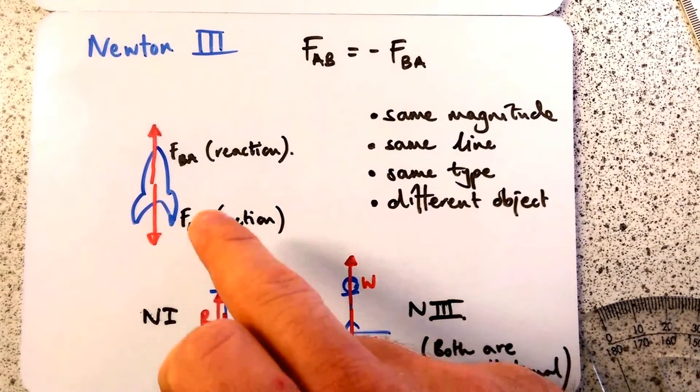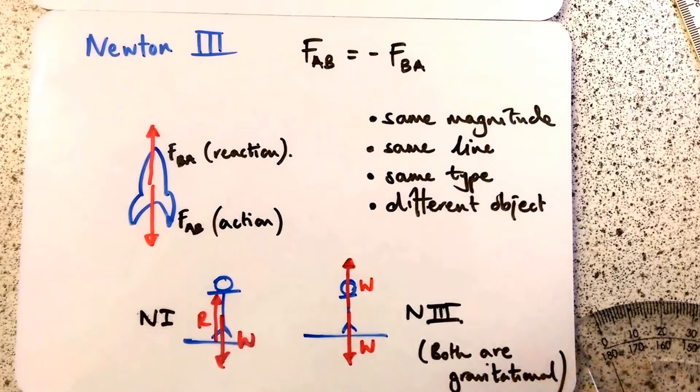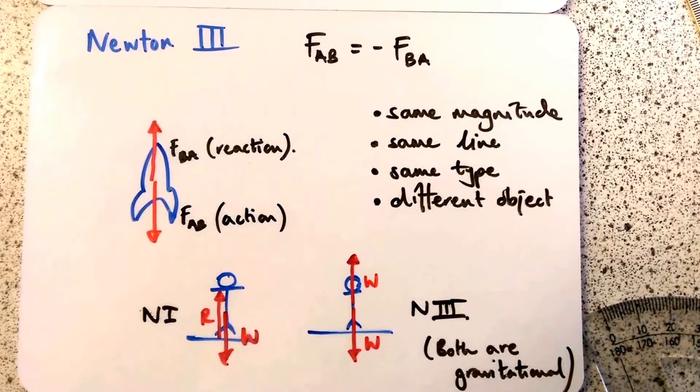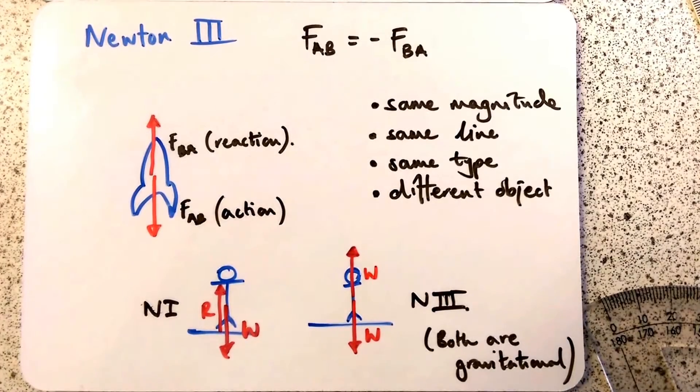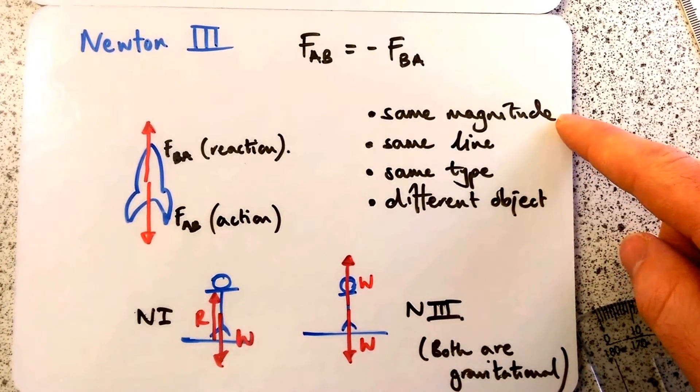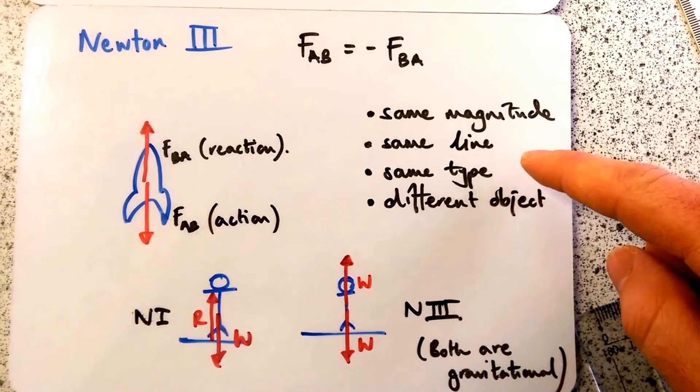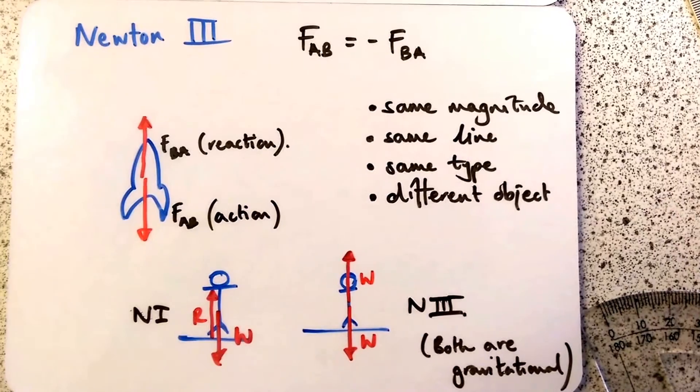Here's some examples. The rocket does a force on the gas - it pushes out the gas backwards. That's the action. The gas then pushes the rocket forwards. That's the reaction. It must always be for Newton's third law: the same magnitude, the same line of action, the same type, but from a different object. That's very crucial.